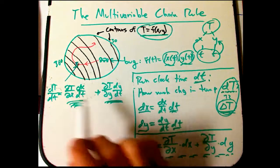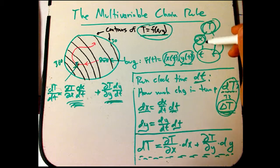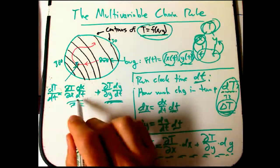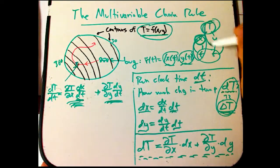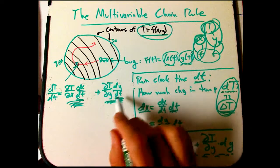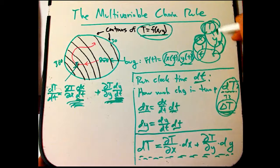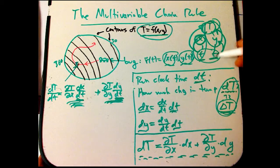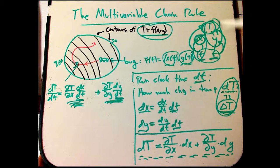Each of them says what's the sensitivity of the final quantity to the intermediate quantity times the actual rate of change of how fast is that intermediate quantity changing, plus the sensitivity of the final quantity to this other intermediate quantity times how fast is that intermediate quantity actually changing. The reason it's a sum is that there's two different and independent ways that a change in the t variable, the time here, the original independent variable, can affect the big T, the final variable, the dependent variable, through these two intermediaries.